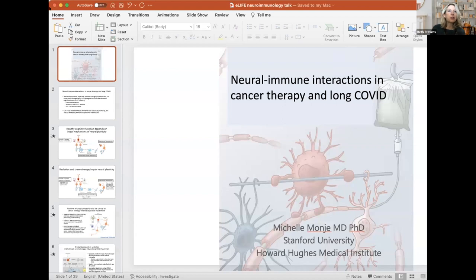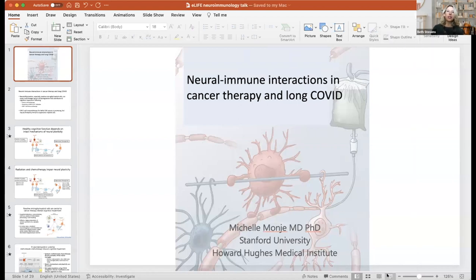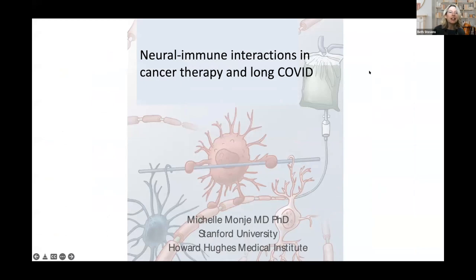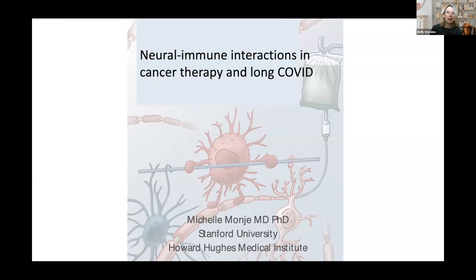Thanks, Irene. That was great. My pleasure now to introduce our second speaker, Dr. Michelle Manger, who is a professor of neurology at Stanford University and a newly minted HHMI investigator and MacArthur Fellow. Michelle is a creative neuroscientist and neuro-oncologist who has been investigating the growth and development of both healthy and cancerous cells in the brain. She discovered that neuronal activity regulates myelinating glia and how this impacts neural circuits, and more recently that activity can regulate glial cancer cells through a host of neuroimmune signaling mechanisms.